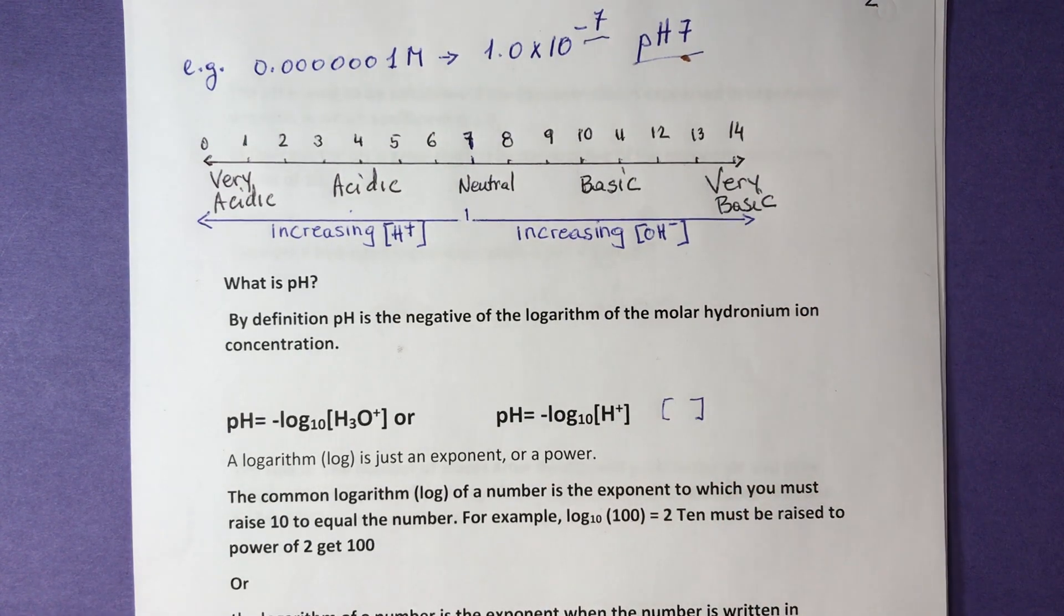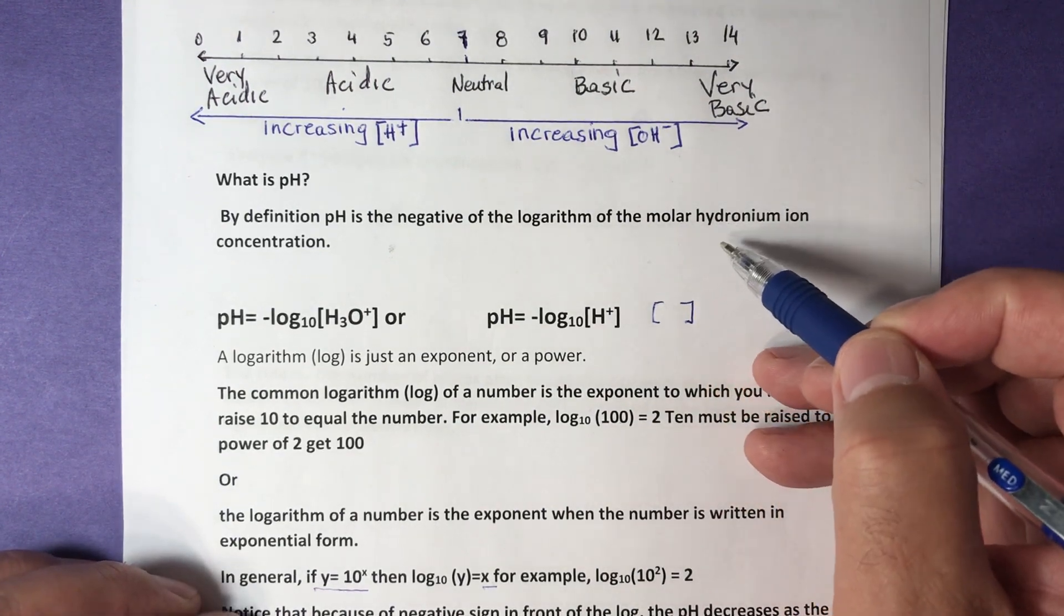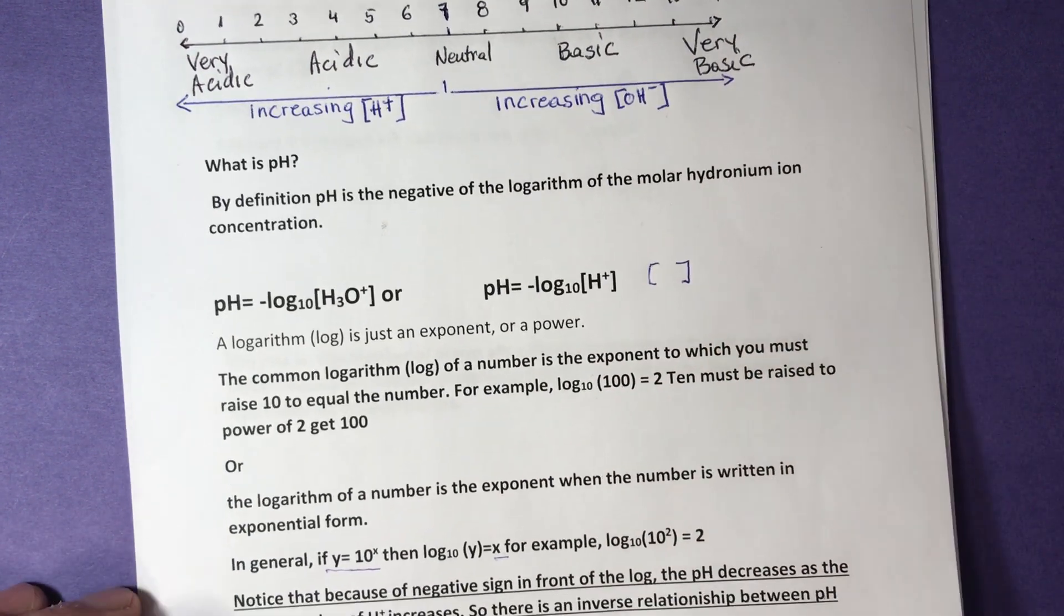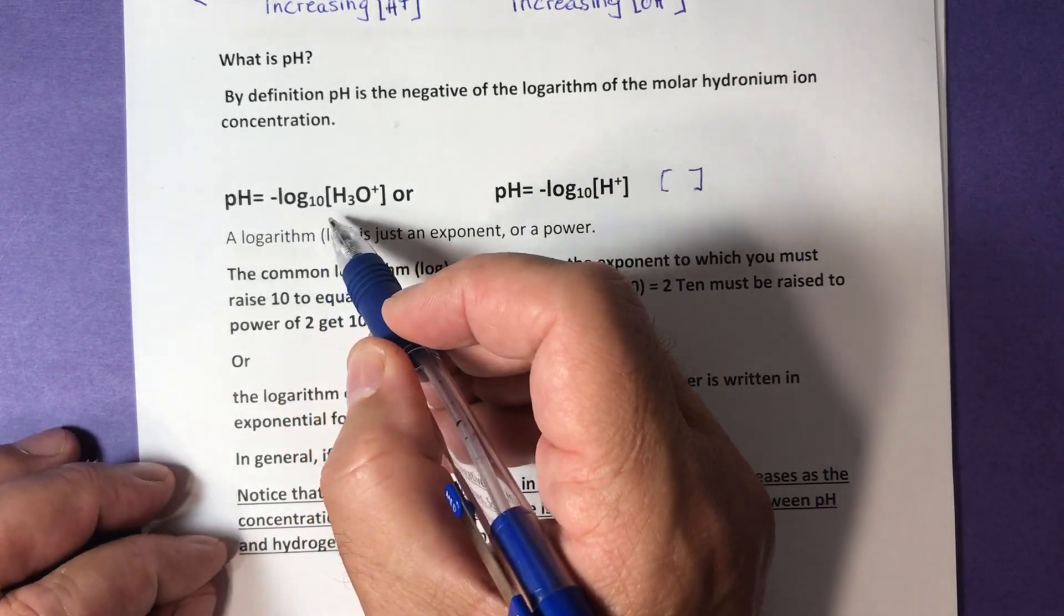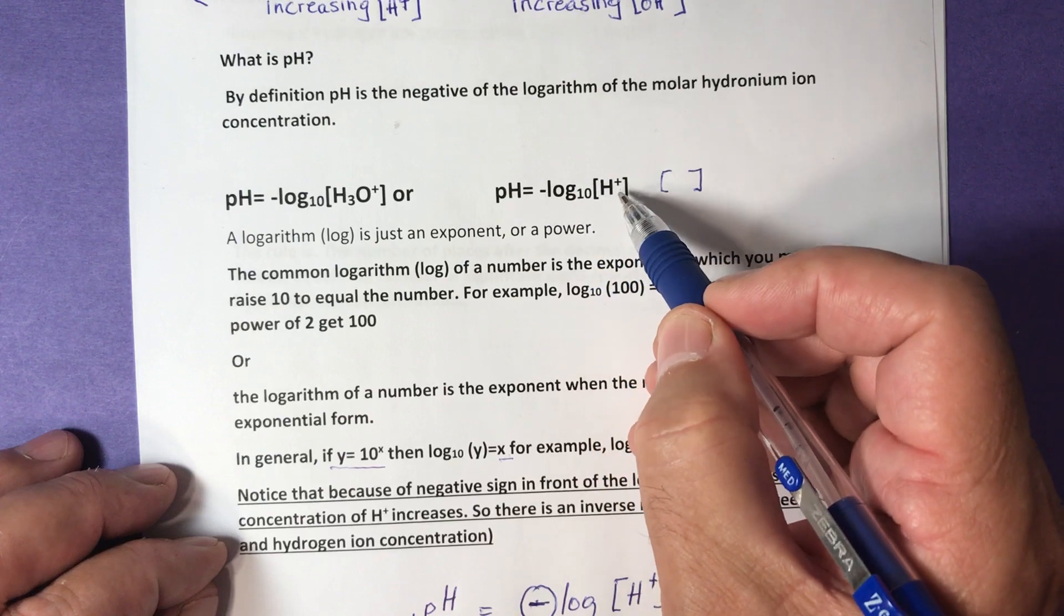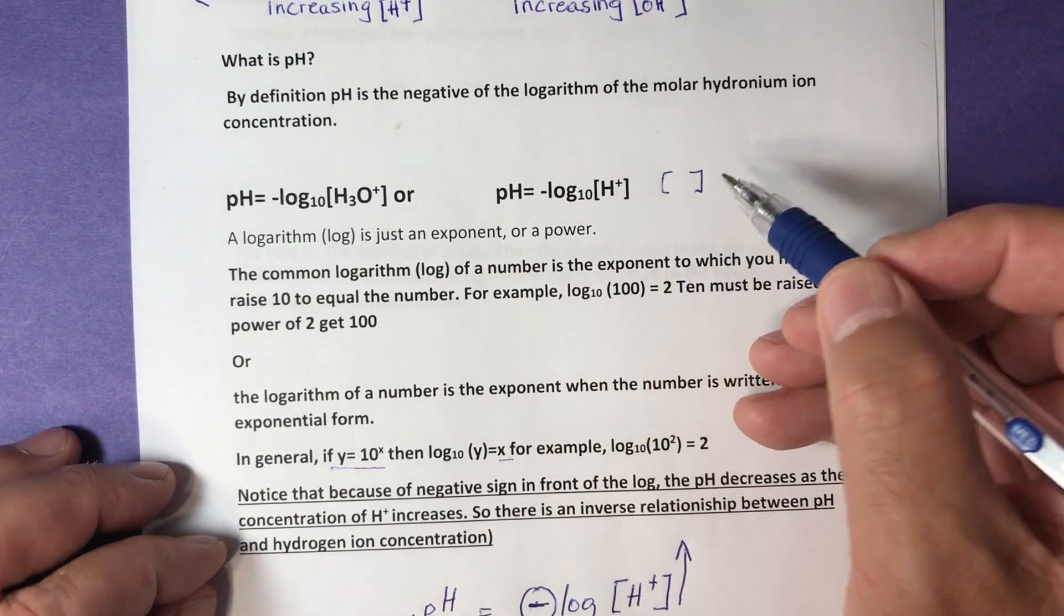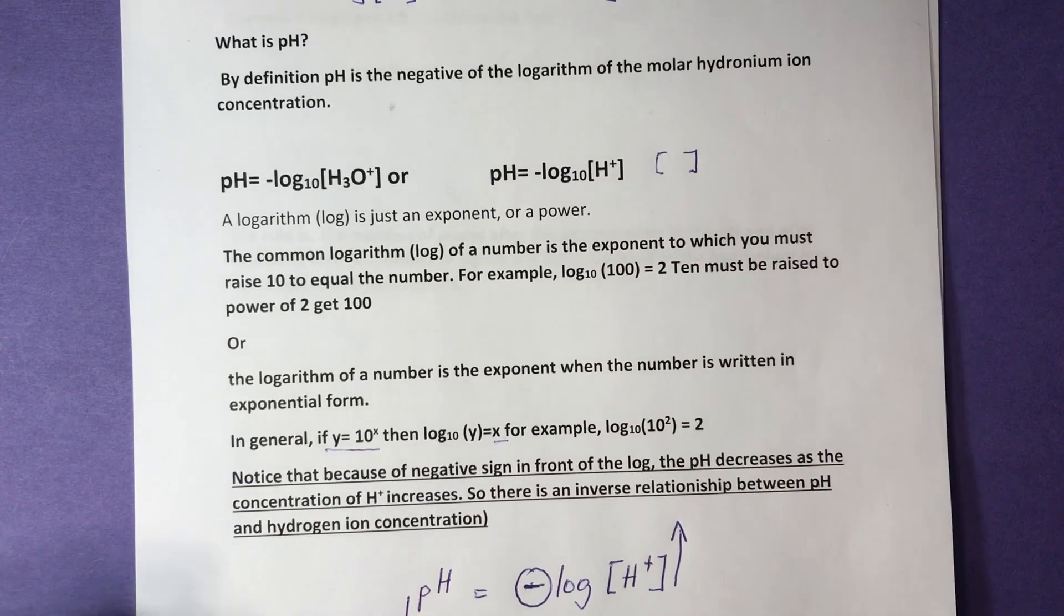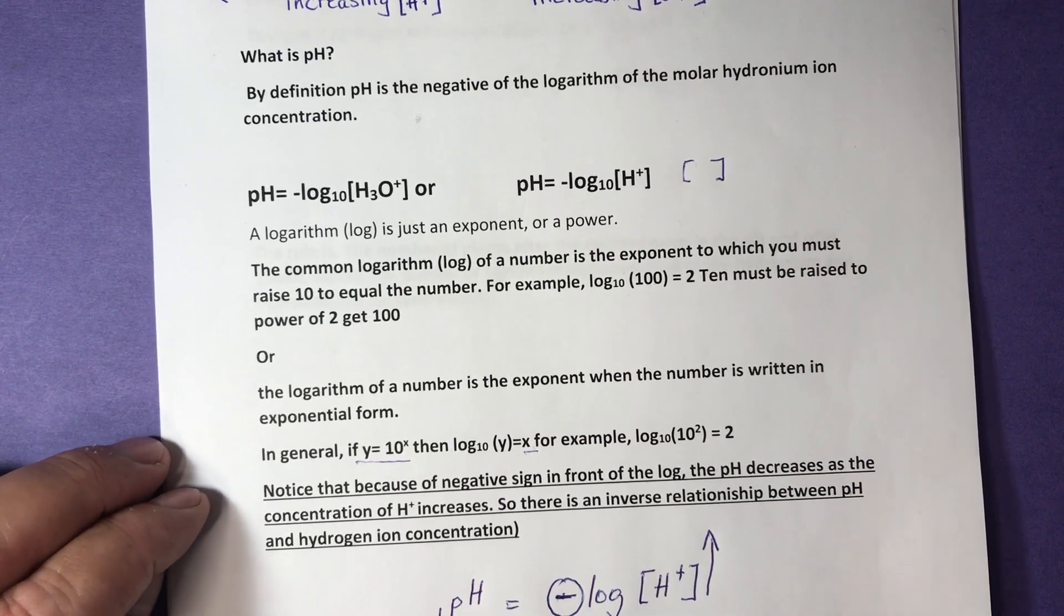But what is pH? By definition, pH is the negative of the logarithm of the molar hydronium ion concentration. The formula is pH equals negative log base 10 of H3O+ concentration, or pH equals negative log base 10 of H+ concentration. Brackets stand for concentration.